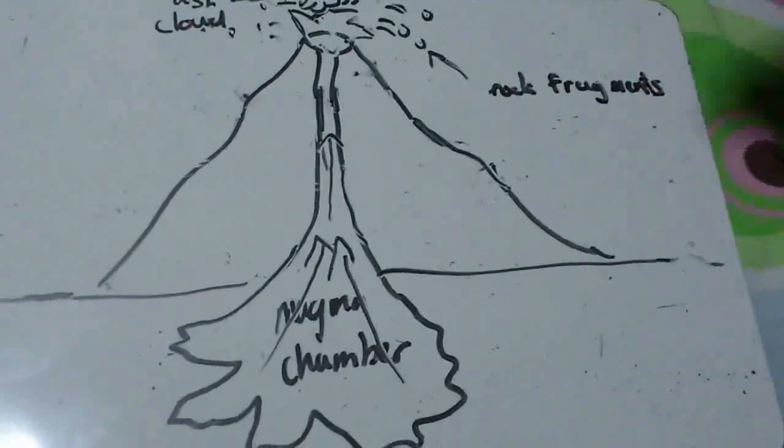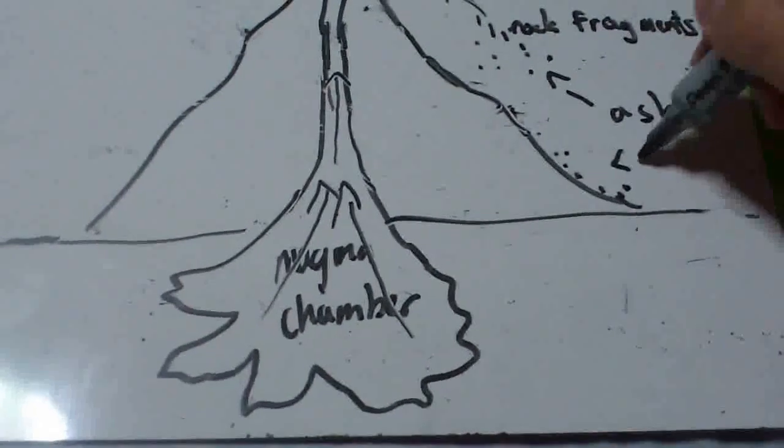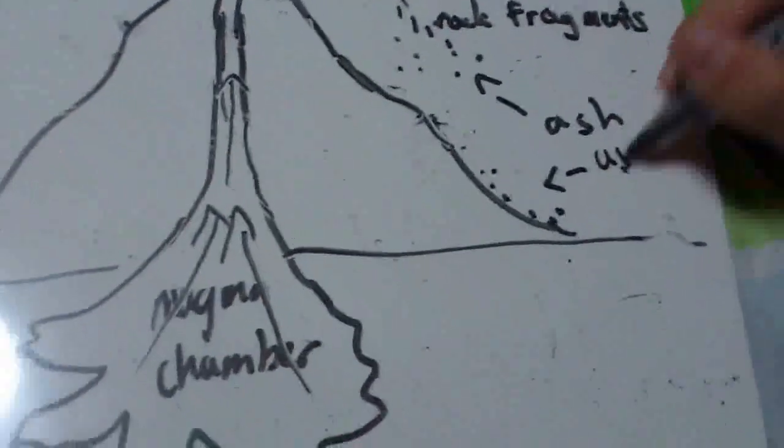When a volcano erupts, lava, ash, and rock fragments are released. The force of the volcanic eruption depends on the amount of pressure and gas in the magma.